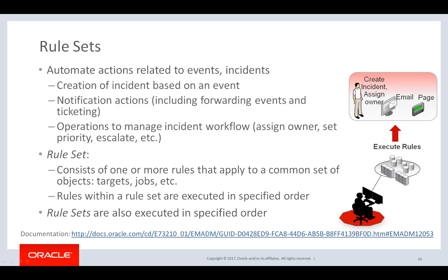An enterprise rule set automates actions related to an EM event, incident, or problem. It allows creation of an incident based on an event and provides notification actions to notify administrators, including forwarding of the event to third-party event management and ticketing systems. As part of a rule set, you can also automate operations to manage the incident workflow, such as assigning the incident to an owner, setting priority based on a defined set of conditions, or escalating the incident. A rule set can have one or more rules that apply to a common set of objects such as targets, jobs, metric extensions, or self-updates, and take appropriate actions to automate business processes. The rules within a rule set are executed in top-down order, as are the rule sets themselves, so it's important to organize rules and rule sets in the order you want them evaluated by the EM rule engine.